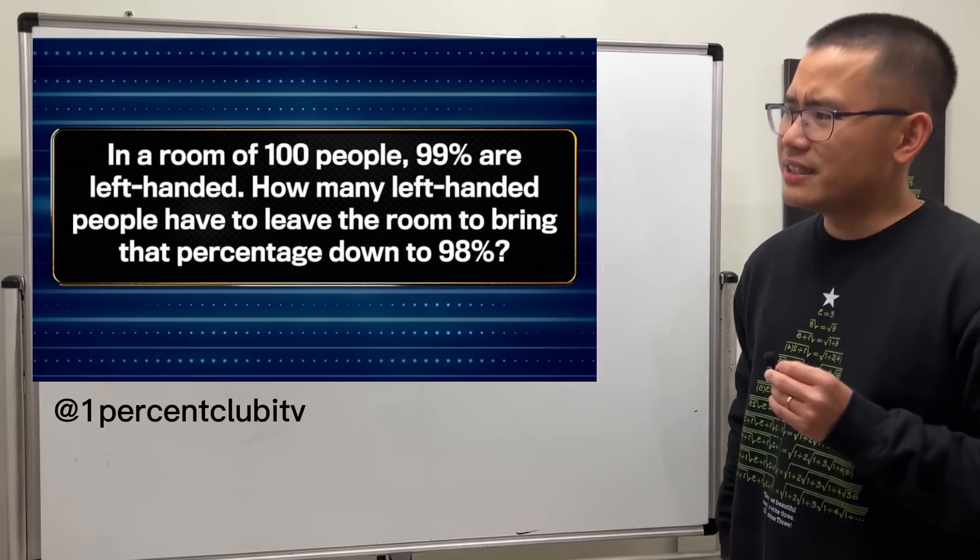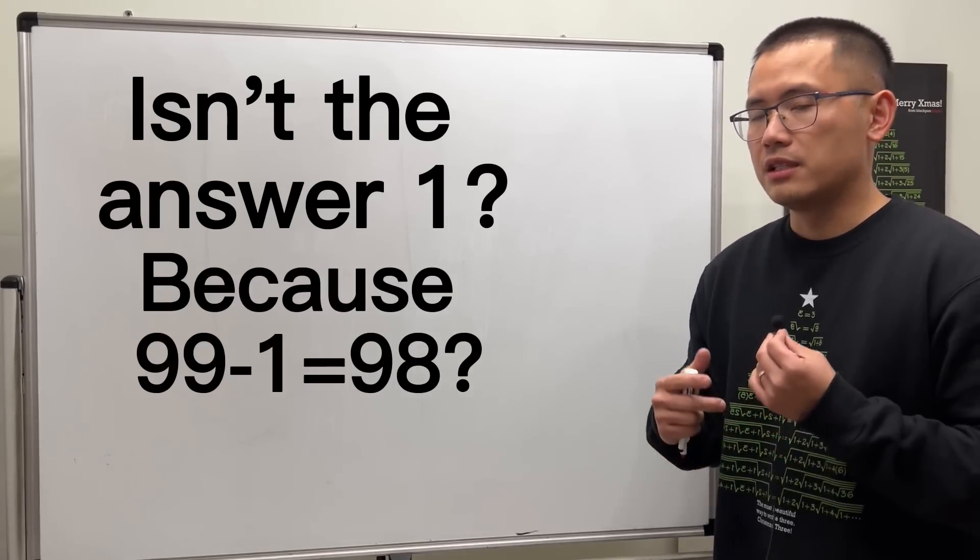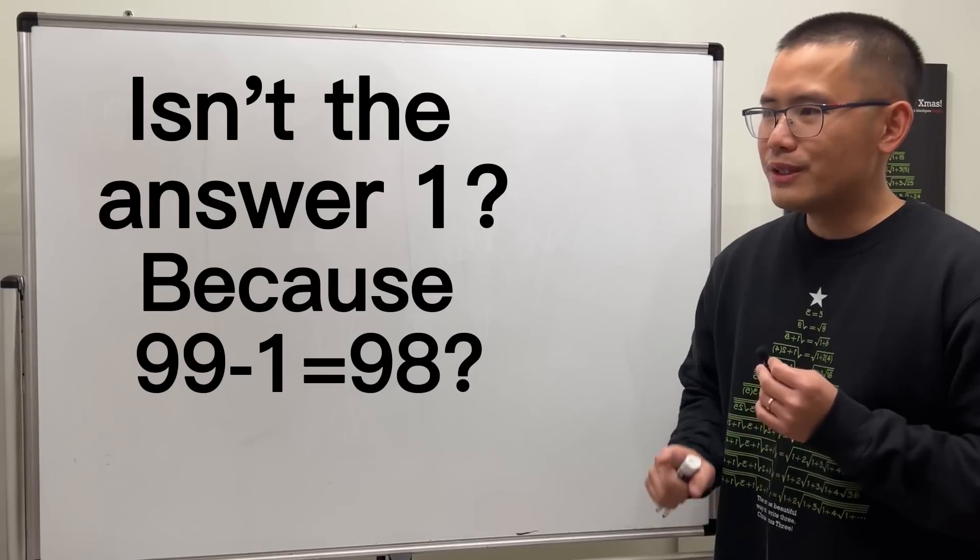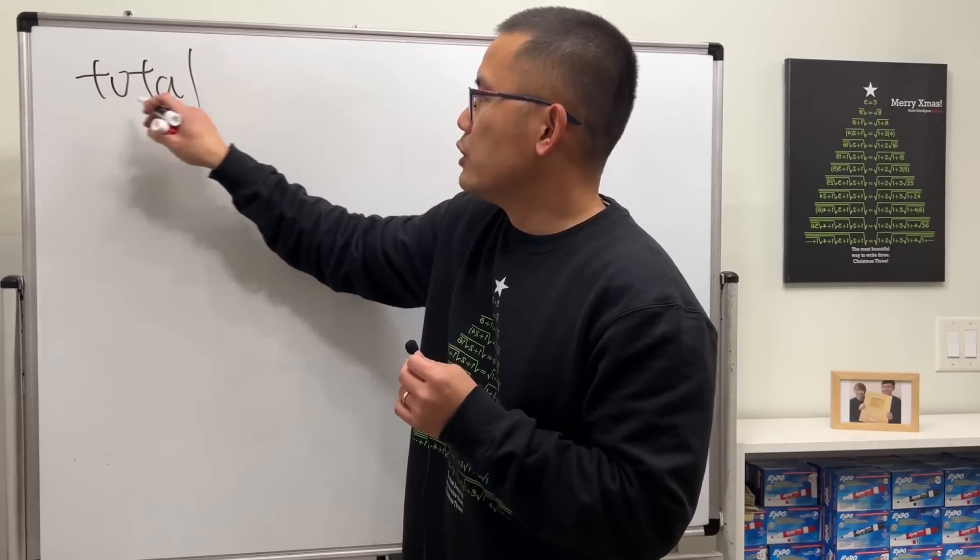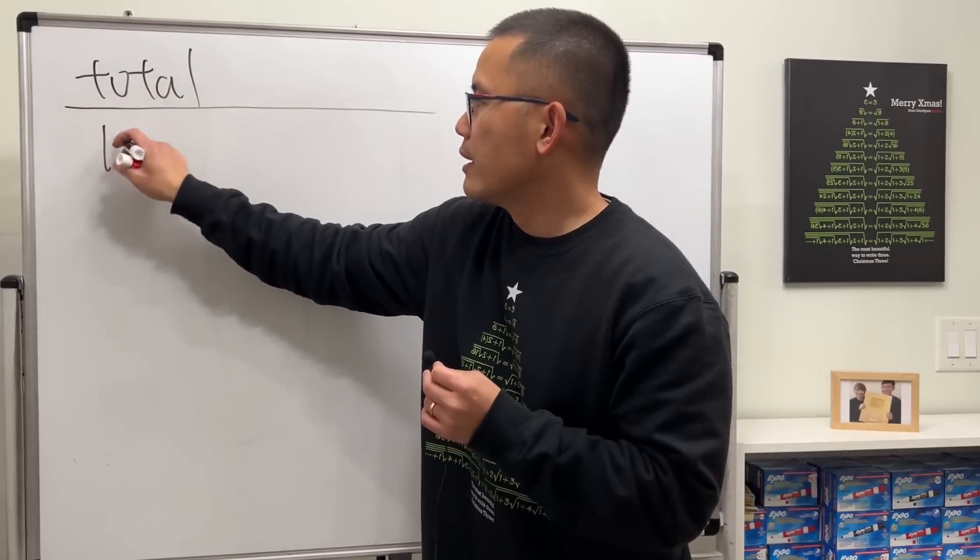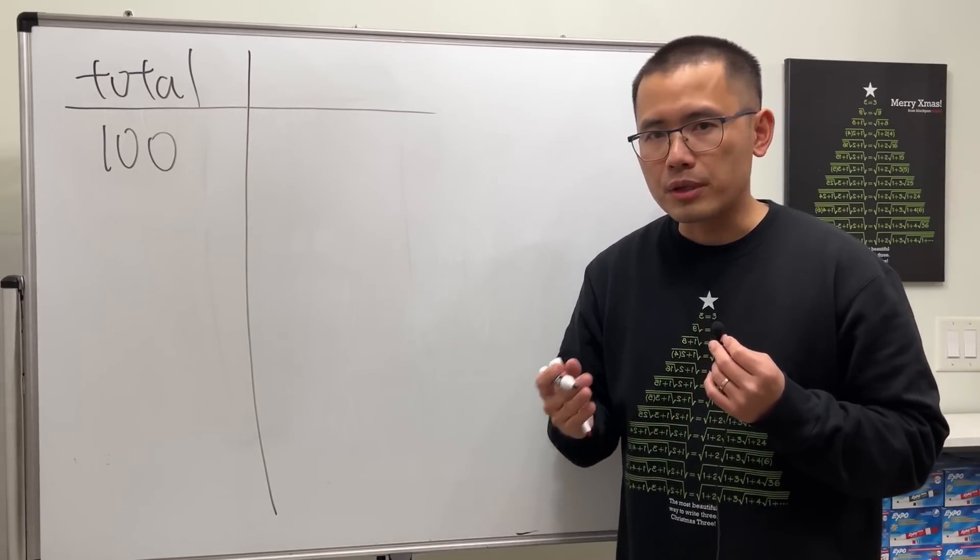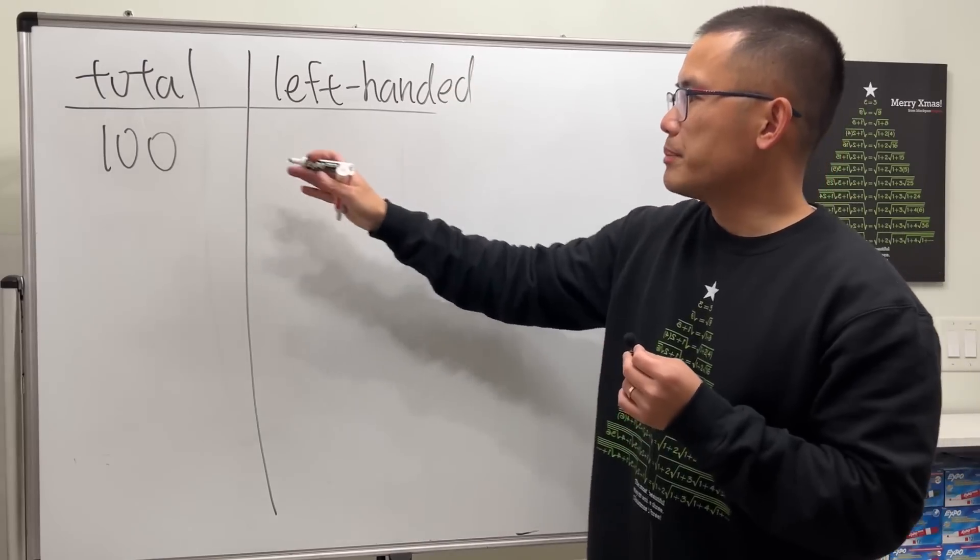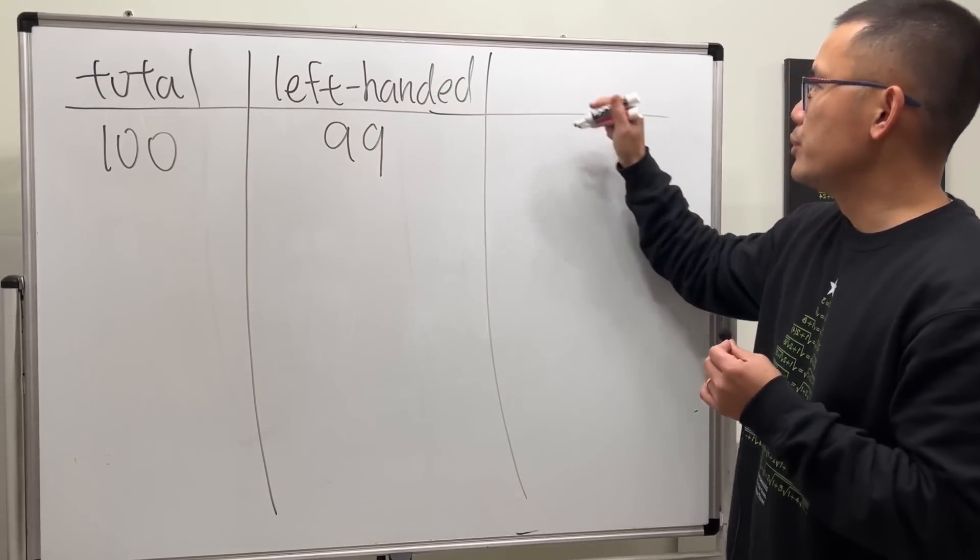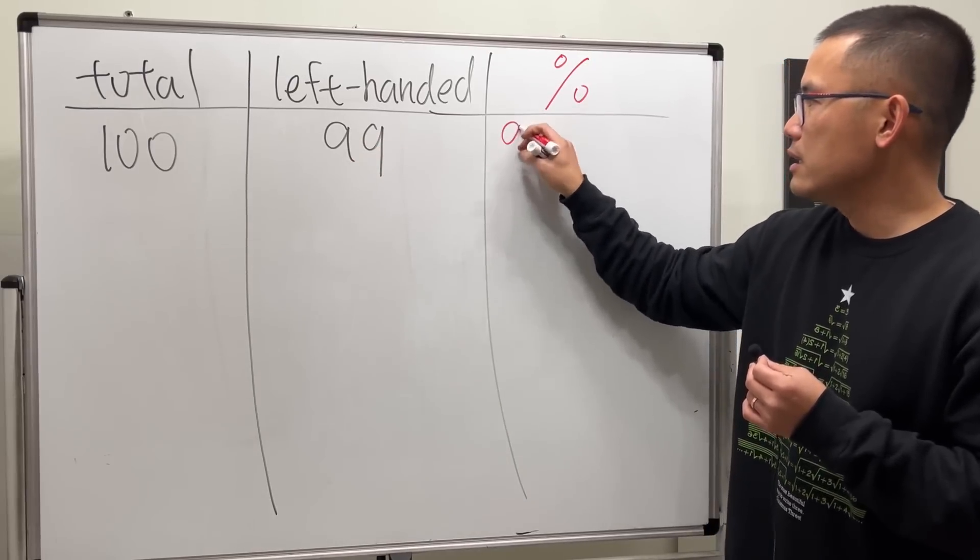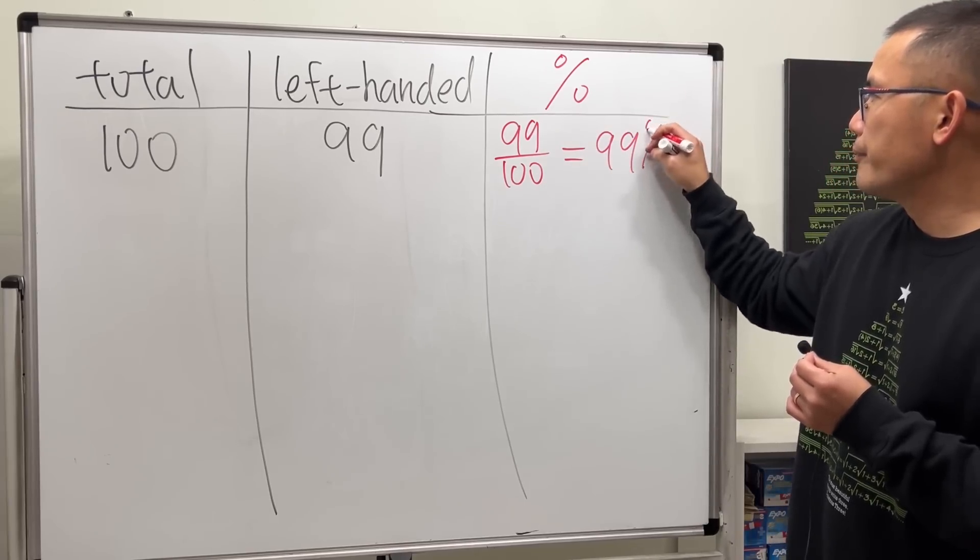A lot of people are just thinking that the answer is equal to 1, because 99 minus 1 gives us 98. Well, that's actually not correct. Here's the deal: firstly, the 100 is the total number of people we have in the room. And because 99% of them are left-handed, 99% of 100 is just 99. We can compute the percentage: 99 divided by 100 equals 99%.